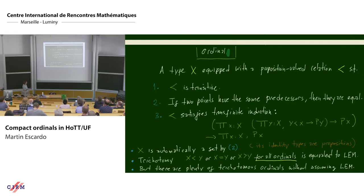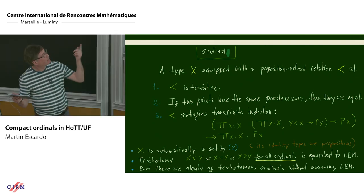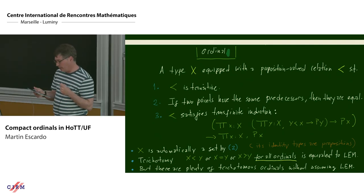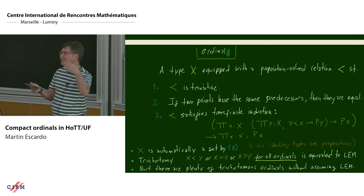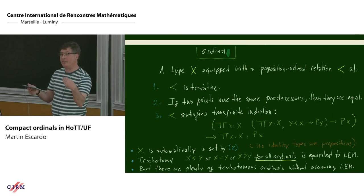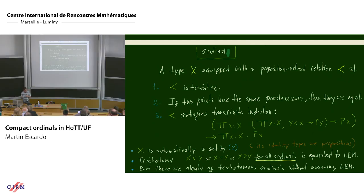Accessibility is equivalent to the principle of transfinite induction: you can prove a property holds for every x by showing that whenever it holds for all predecessors of x, it also holds for x — which is constructively true for example for the natural numbers. One reason to use accessibility rather than the other definition is that accessibility lives in the same universe you're working in, whereas the transfinite induction form quantifies over all propositions and lives in the next universe. In practice I use the latter because it's more convenient to think about, but to define the type of ordinals it's better to use accessibility.